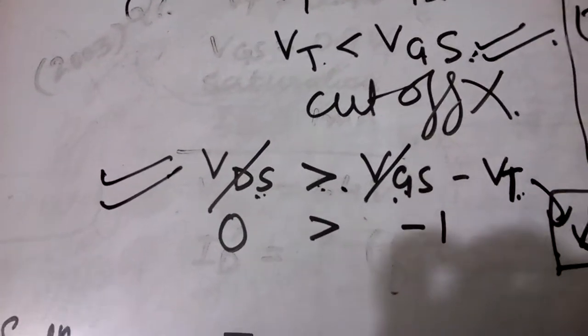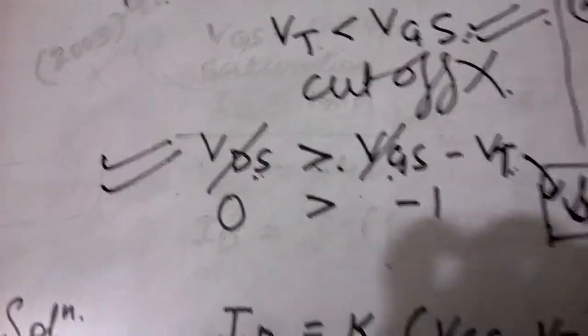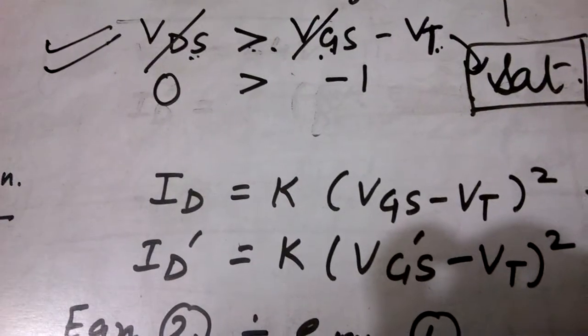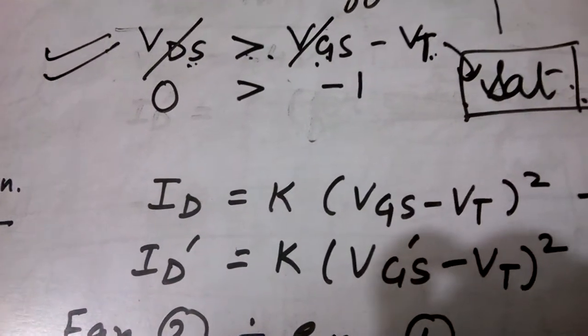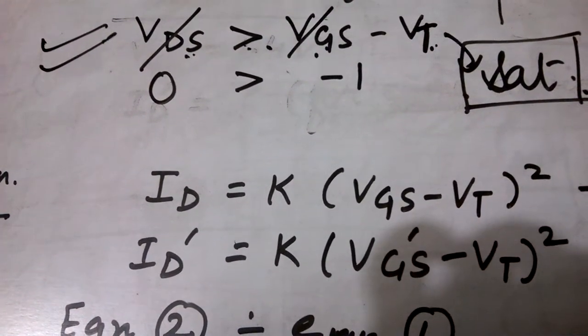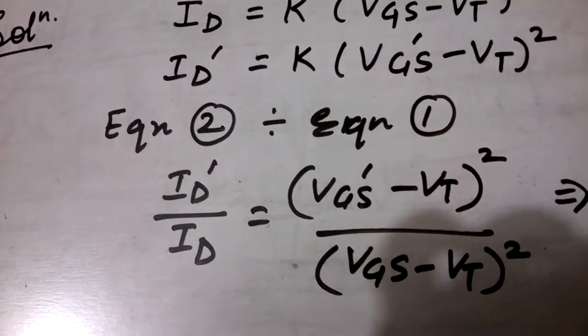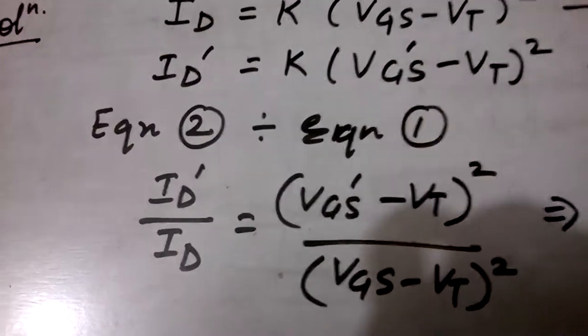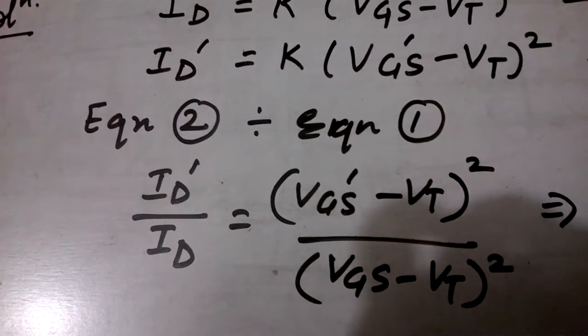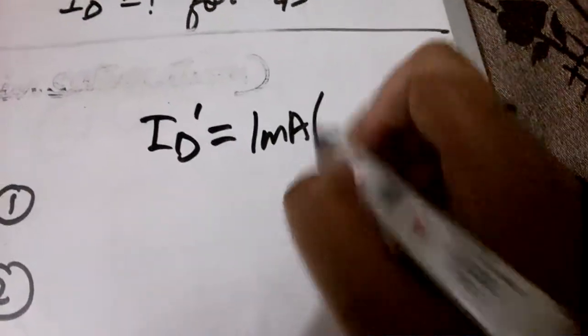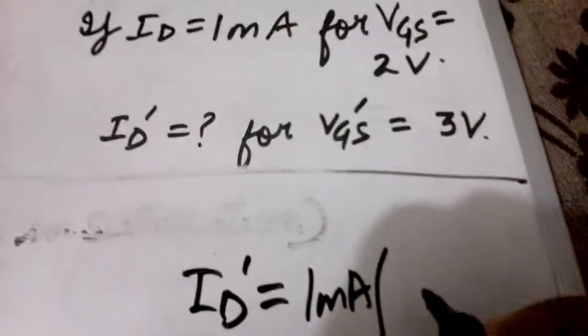Next we come on to how we solve this numerical. Again, as we did previously, we will write two equations. Since these are the equations of current in the saturation region, these can be applied. Then again we divide both the equations. Now we can put the value to find ID dash. My ID dash will be equal to ID, that is 1 milliampere, times (VGS dash which is given to us as 3 minus VT which is 1) divided by (VGS was 2, so 2 minus 1) whole square.